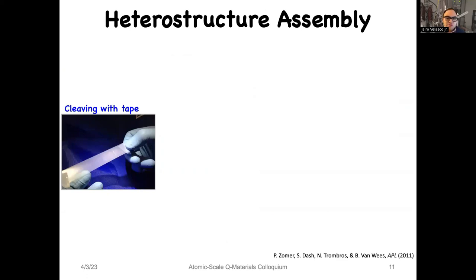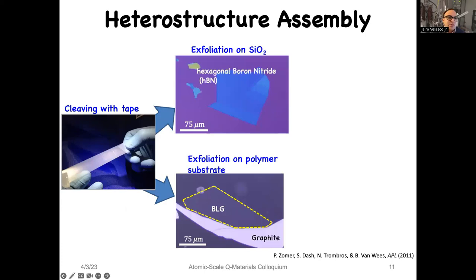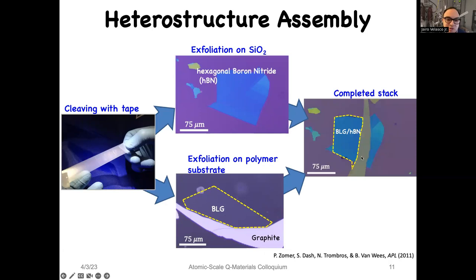Our samples are made the old-fashioned way by stacking. First we use scotch tape to cleave hexagonal boron nitride and bilayer graphene. Hexagonal boron nitride is an insulating 2D material that we exfoliate onto silicon dioxide chips. The bilayer graphene is exfoliated onto a polymer substrate. We then use an optical microscope to align these two materials and mechanically stamp them together to produce a completed bilayer graphene / hexagonal boron nitride heterostructure.